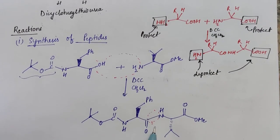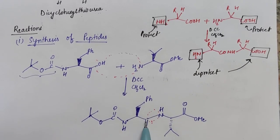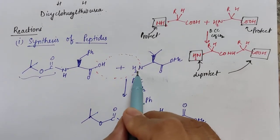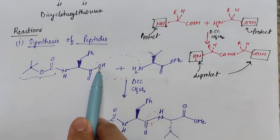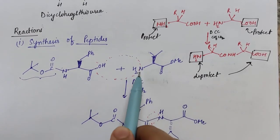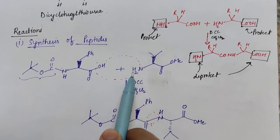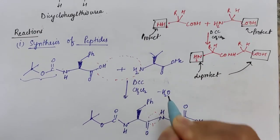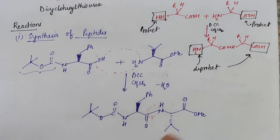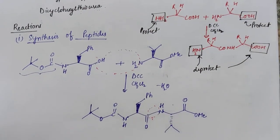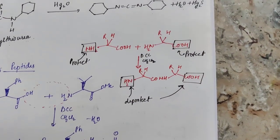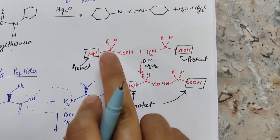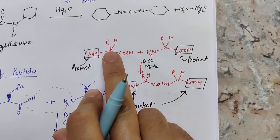Peptide bond formation — essentially an amide bond — takes place, and a water molecule is released. The OH of the carboxylic functional group and the hydrogen of the NH2 group are released as water, forming one bond.